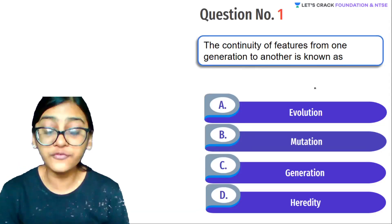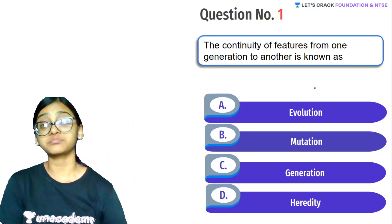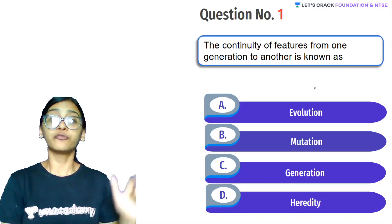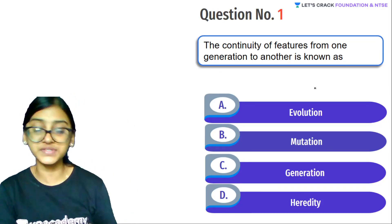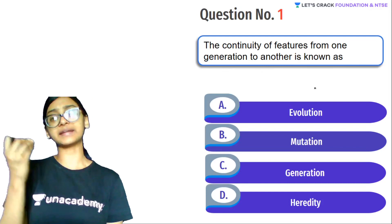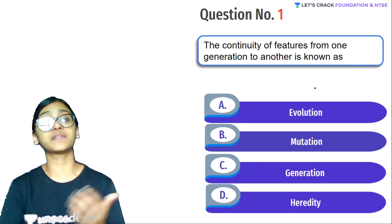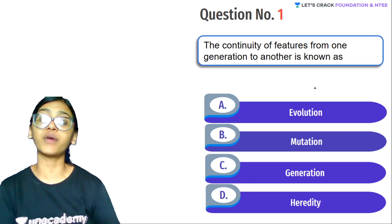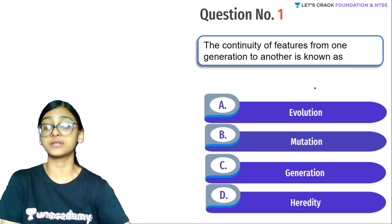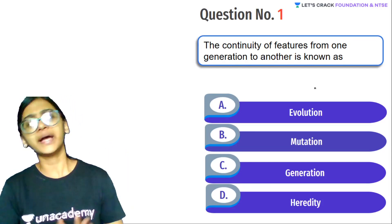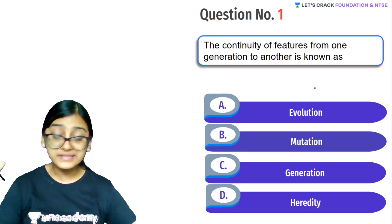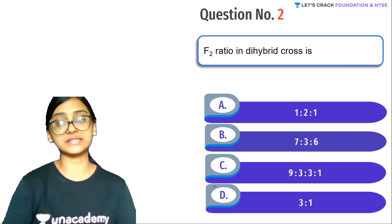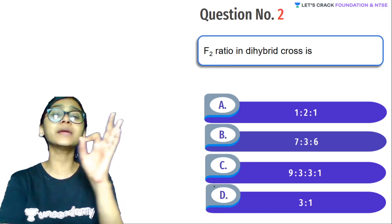Our very first question is from heredity and evolution: 'The continuity of features from one generation to another generation is known as...' Options are: A - evolution, B - mutation, C - generation, D - heredity. This is a very simple question. The correct answer is D — heredity.